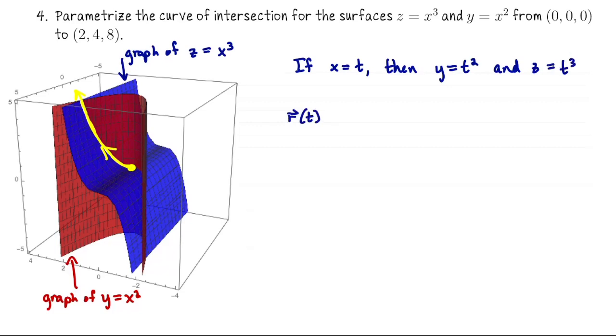So the curve of intersection is r of t is t, t squared, t cubed, and then we have t going from 0 to 2 because x goes from 0 to 2.